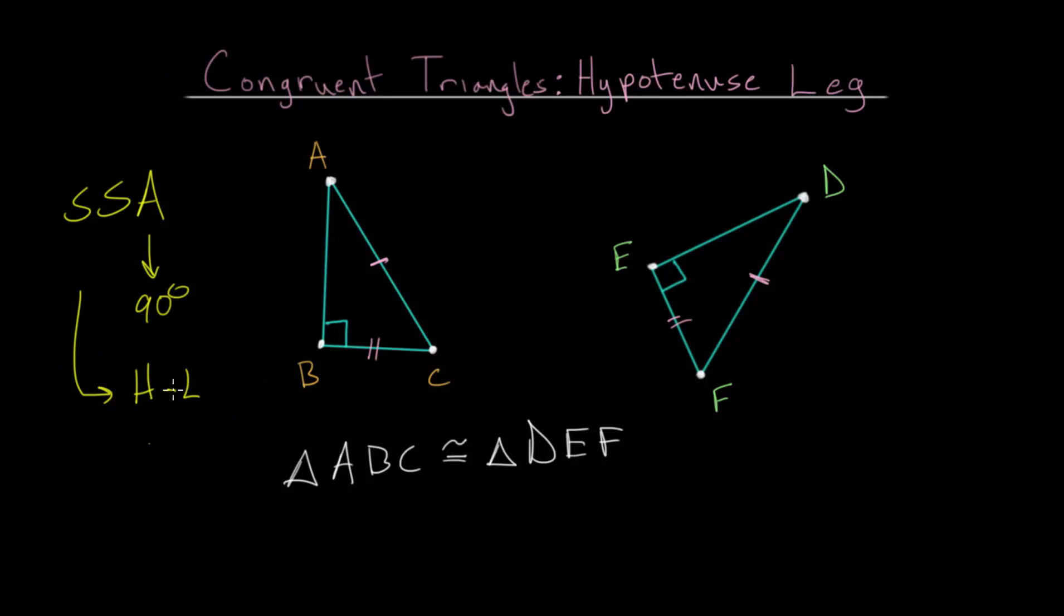And one way to understand why this is true is that since we have a right triangle, and we know the hypotenuse in each one is equal, and we know one of the legs is equal to the corresponding leg on the other triangle, then using the Pythagorean theorem, again this is a right triangle, we can determine that the third side of this triangle, this other leg, is equal to the corresponding leg on this side here.